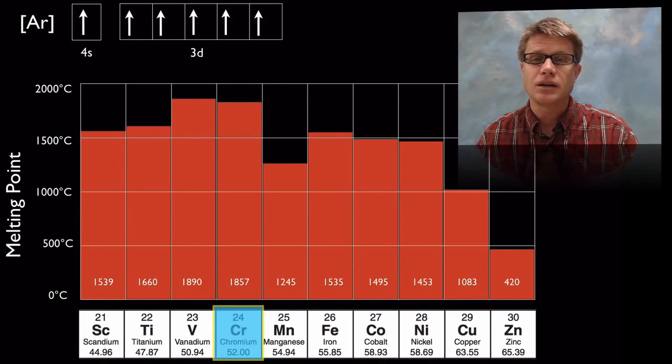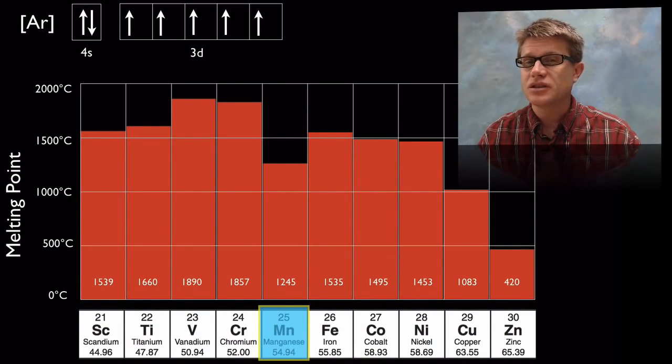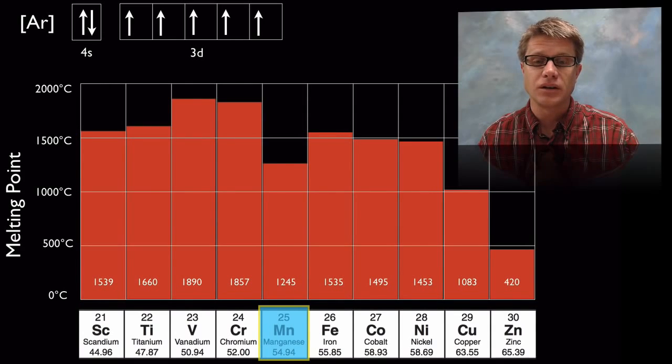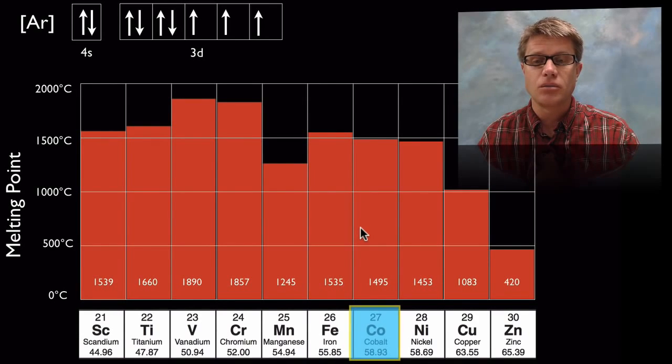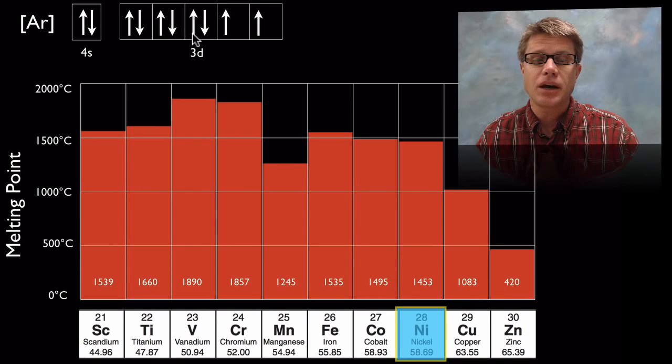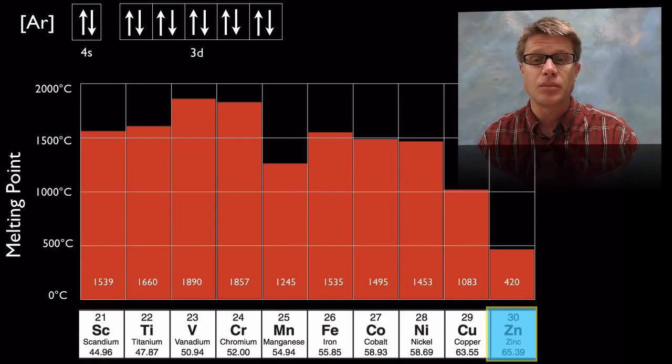But if you look here when we get to chromium it kind of dips. And the reason why is that it actually is not going to fill this 4S before it jumps into the 3D. And then as we go to manganese you get a real stable shell structure where all of these are filled. And so the melting point is going to drop off. But now that pattern picks up again. Now we're going to start adding electrons. So when we go to iron and to cobalt and to nickel, now we're adding these paired electrons. And as we pair those electrons, now we don't have those free electrons anymore. And so we're going to decrease the melting point as we get all the way down to zinc. And remember as we get to zinc we're moving over towards those nonmetals. And so we're starting to see odd properties here as well.